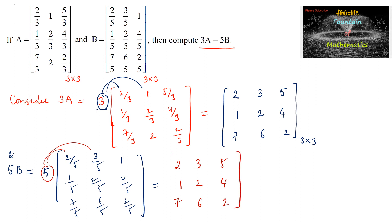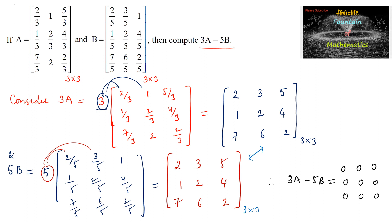We can see that 3A and 5B are the same matrix — all corresponding elements are equal. Therefore, 3A minus 5B gives us a zero matrix, with every element equal to 0. So the result is a 3 by 3 zero matrix.